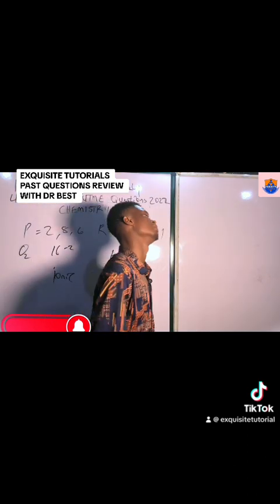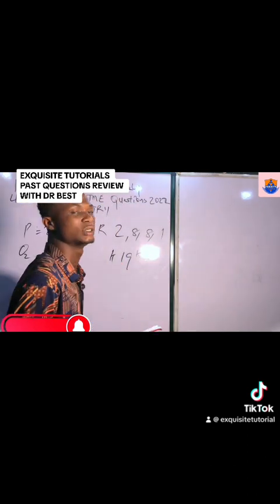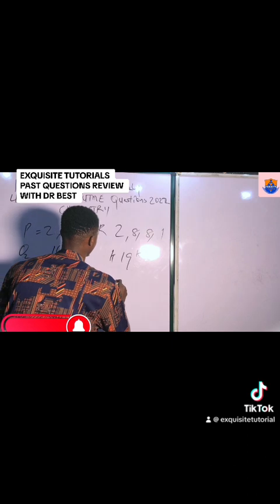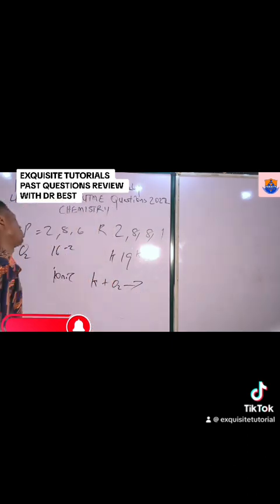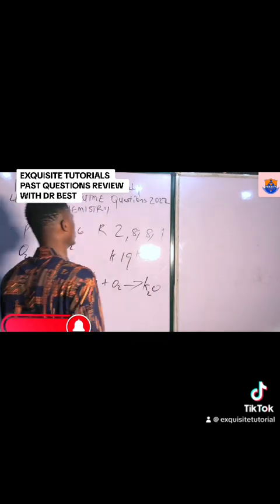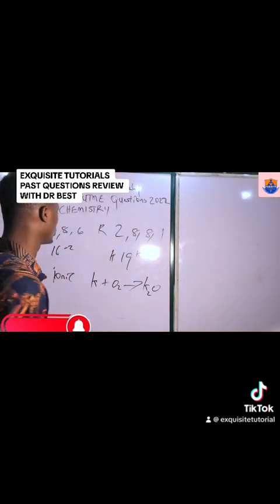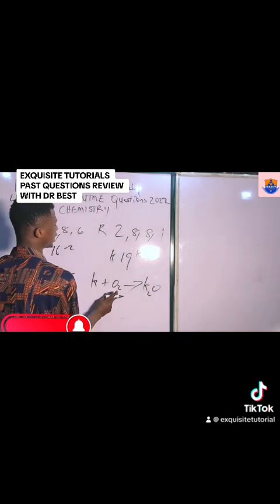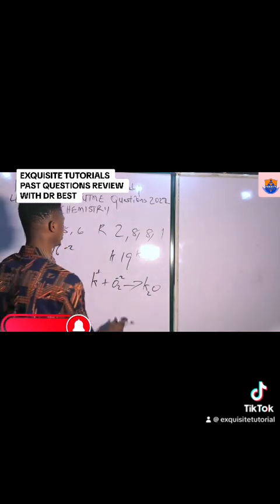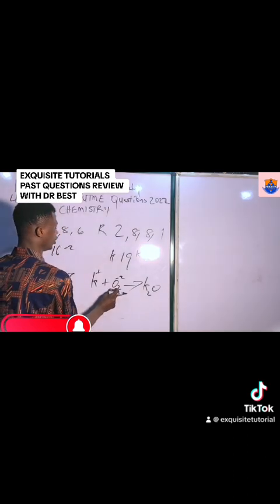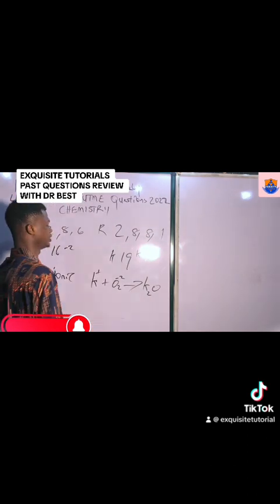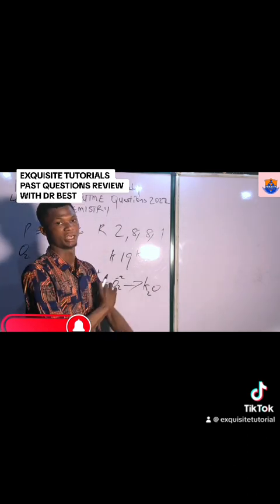They are also testing our understanding of chemical reactions. If we have potassium reacting with oxygen, what compound are we going to get? We are going to get K2O. The reason is that oxygen has a valency of minus 2, so it needs two potassium atoms — each giving one electron to oxygen — for both to achieve a stable configuration.